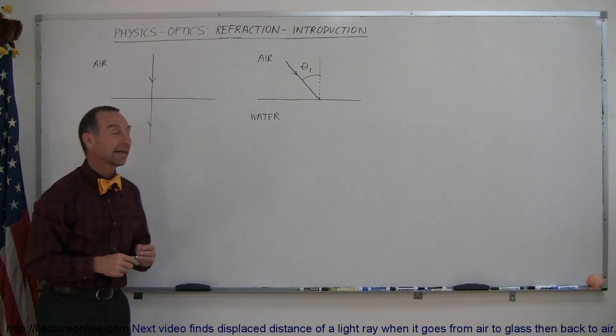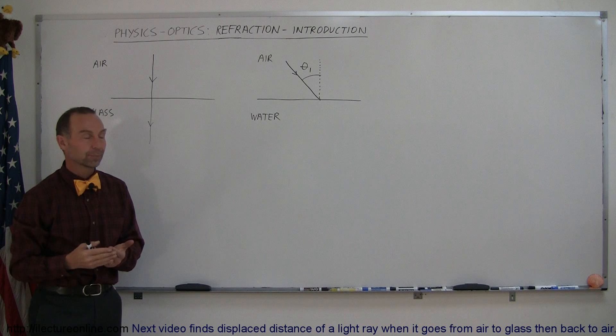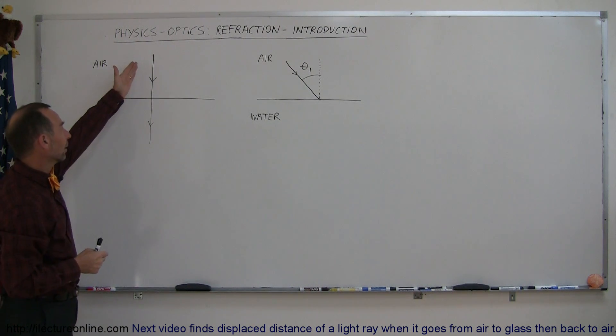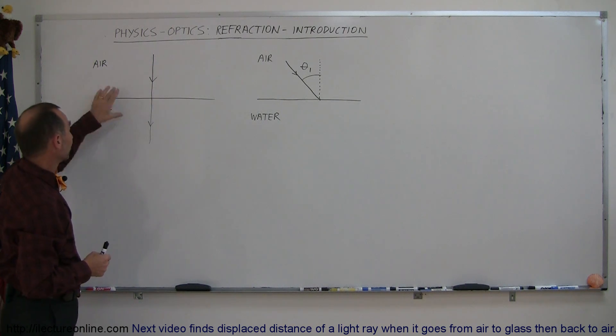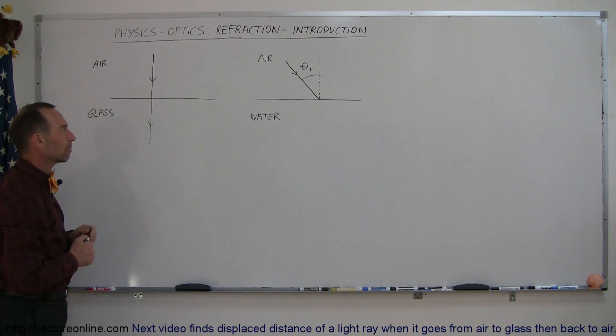Welcome to ElectronLine. Here we're going to talk about another property in optics called refraction. Refraction means that when a ray of light moves from one medium to another medium, for example from air to glass, something happens once it crosses that boundary.